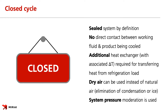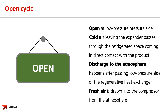Open cycle is open at the low pressure side. Cold air is supplied directly to the refrigerated space, cooling down the product, which means air comes into direct contact with the product. After passing through the recuperator, air is discharged to the atmosphere. Fresh air is drawn into the compressor from the atmosphere again.